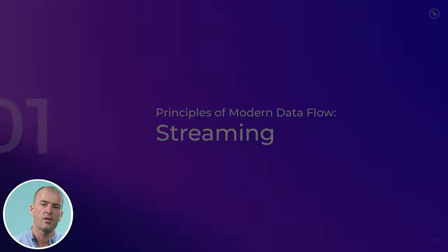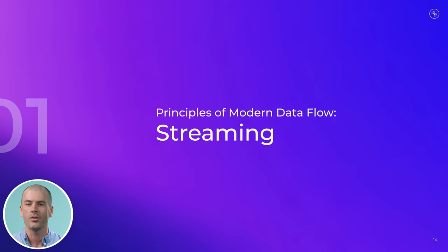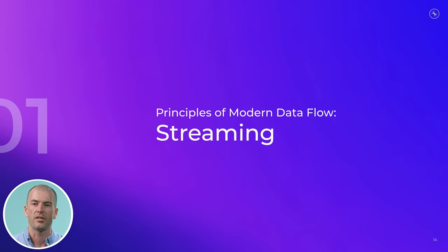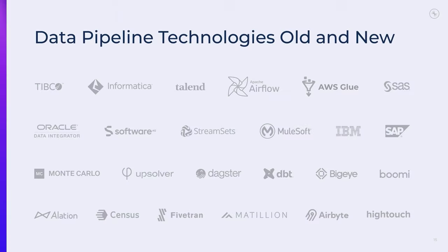The first principle is maybe the most obvious — streaming. Modern data flow is about streaming. We're moving out of a world of batch data copies into something much more real-time, where data flows as it is created and arrives in systems as soon as they can take it, consume it, and use it. We're really building out the technology stack to enable that.